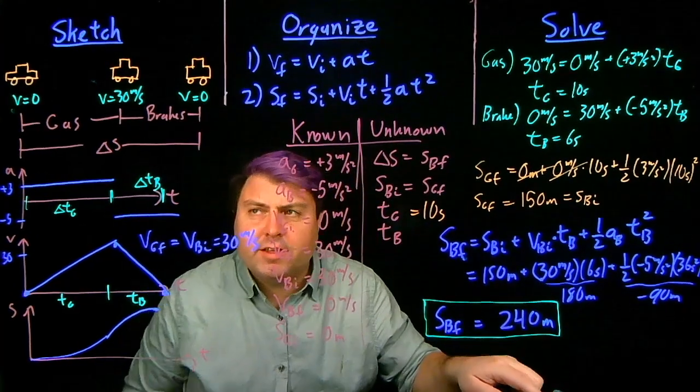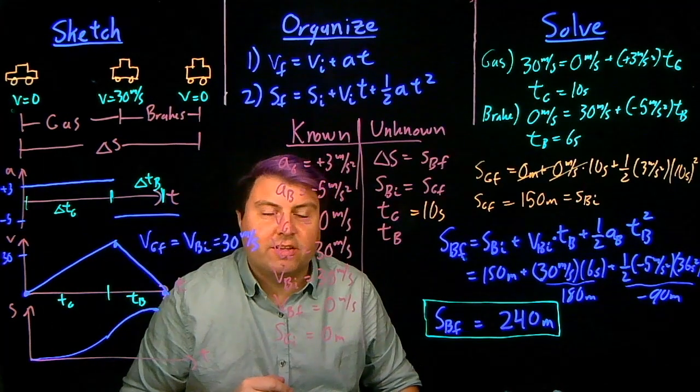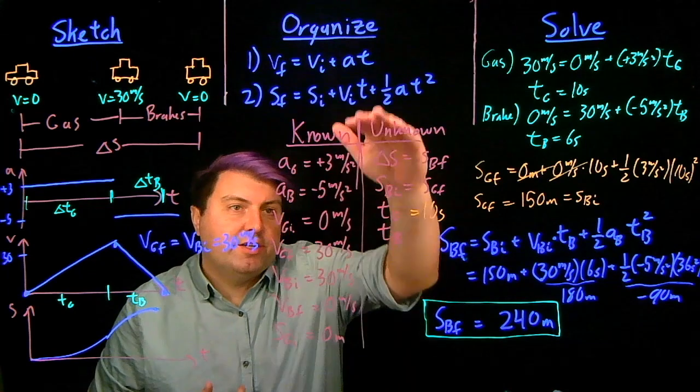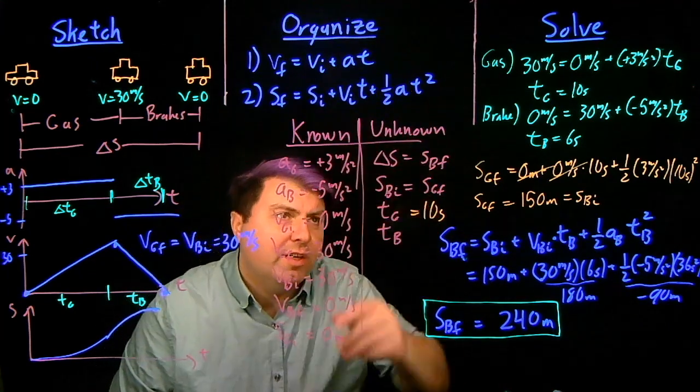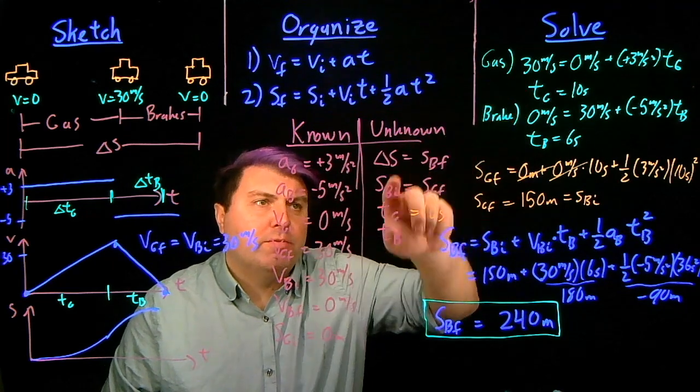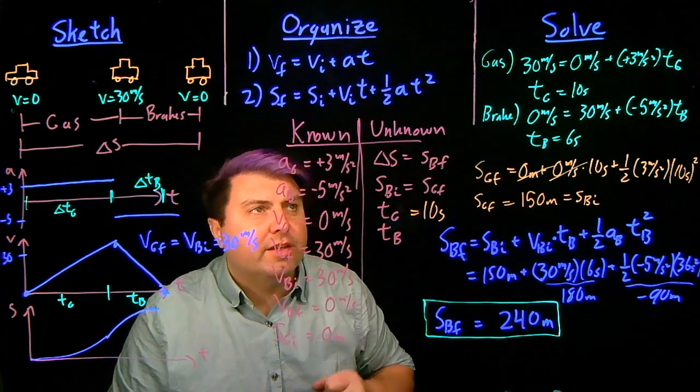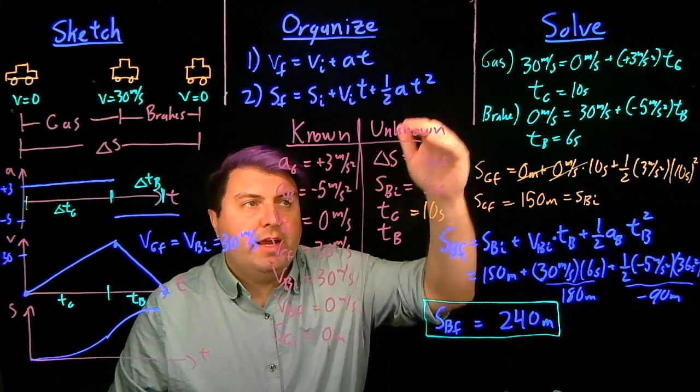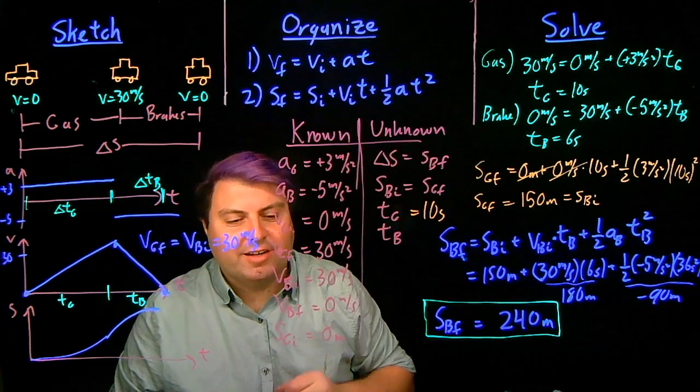So what's important about this is that we have two different constant accelerations. But since they're both constant accelerations, we just write out which one. And we use subscripts, G and B, to help us understand which one we're doing. We can even write, give ourselves little notes, gassing and braking, things like that. And we just don't panic. And we just keep solving one equation, one unknown problems until we get our answer.